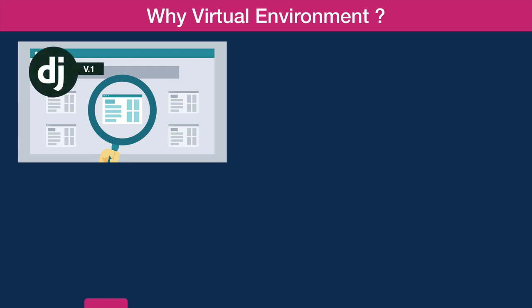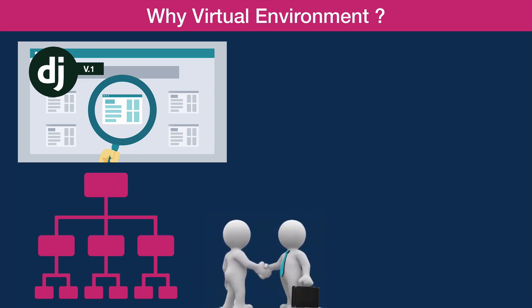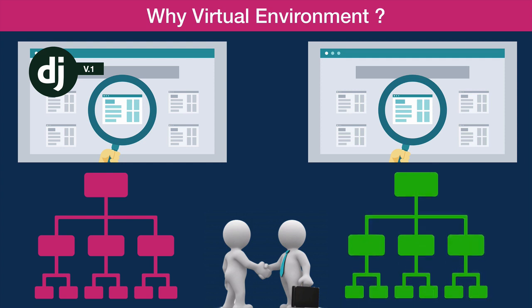Let's visualize the scenario. For example, you have a client who wants you to build a web application using Django version 1. You have one version of Python installed on your Mac or Windows. Now you meet another client who wants to build another web application but he wants to use Django version 2. When you have one installation of Python and you want to override Django version 1 to version 2, it will break your application which was built on Django version 1.